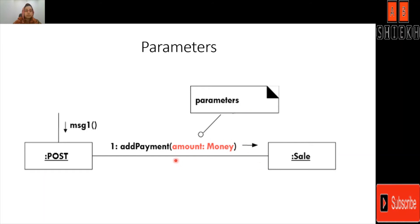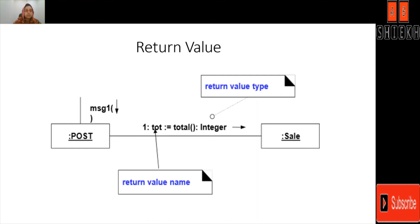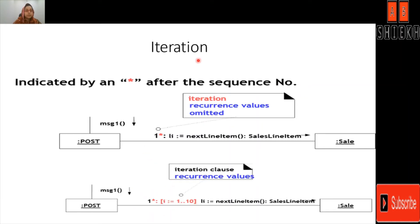Here the parameter name is amount and the parameter type is money, and it flows from post to sale — the direction is represented by the arrow. The return value is represented here: tot is the return value of this message, meaning the total, and the return value type is integer. So tot is the return value whose type is integer, and the direction is from post to sale. This one represents sequence iteration — iterations in the UML collaboration or communication diagram are represented by a star sign after the sequence number. Here, one-star represents that this message is iterative.